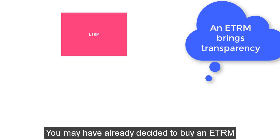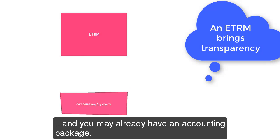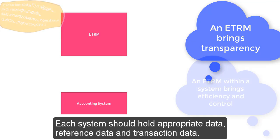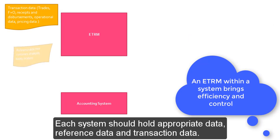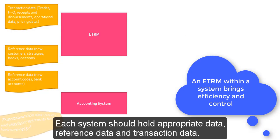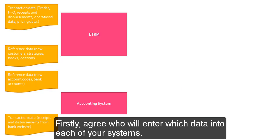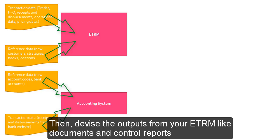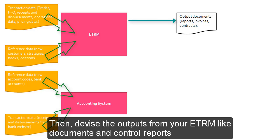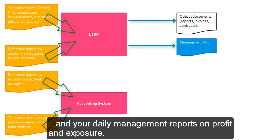You may have already decided to buy an ETRM, and you may already have an accounting package. Each system should hold appropriate data: reference data, transaction data. Firstly, agree who will enter which data into each of your systems, and then devise the outputs from your ETRM, like documents and control reports, and your daily management reports on profit and exposure.